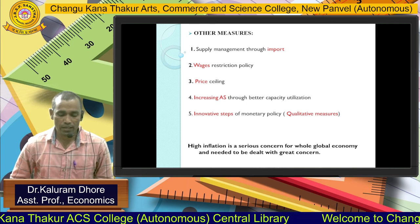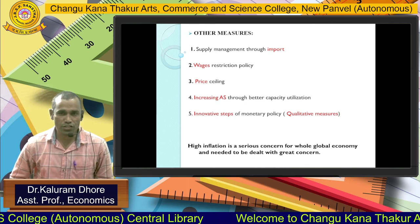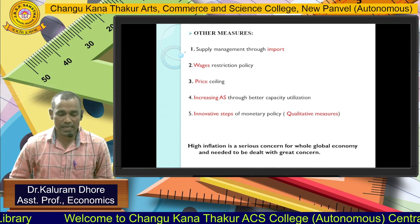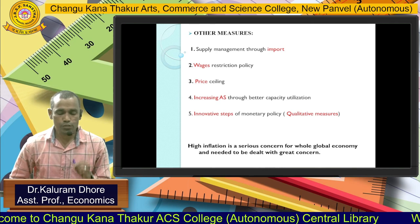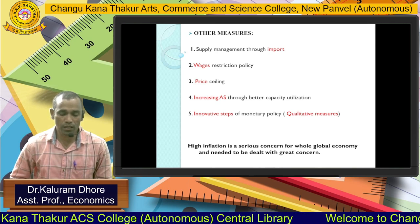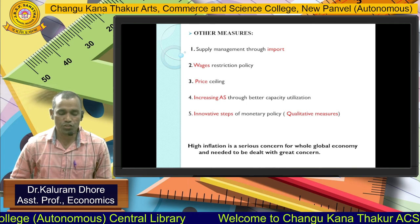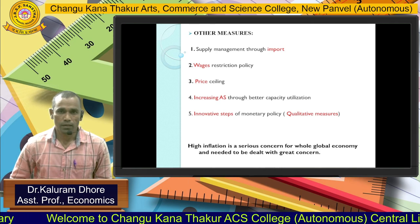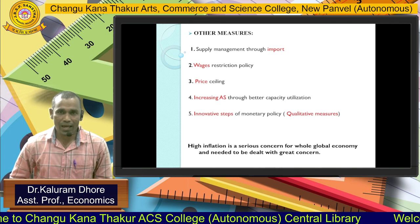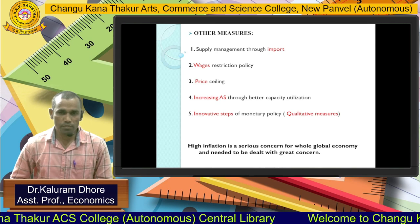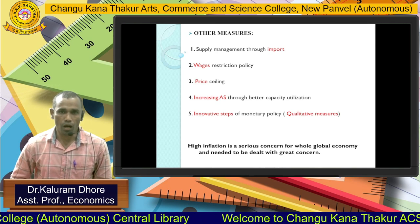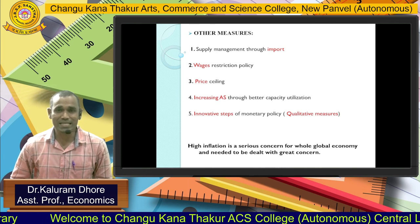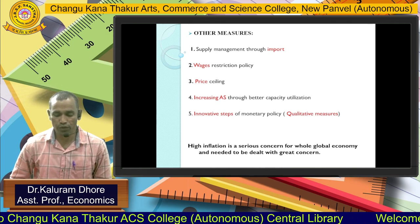Fourth point: increase aggregate supply through better capacity utilization. We know that cost-push inflation can be addressed by increasing aggregate supply. If we want to keep control on expenditure, we have to increase aggregate supply according to capacity utilization. Fifth point: innovative steps of monetary policy, which come under qualitative measures. Before this slide, we discussed quantitative and qualitative measures. High inflation is a serious concern for the whole global economy and needs to be dealt with great concern.